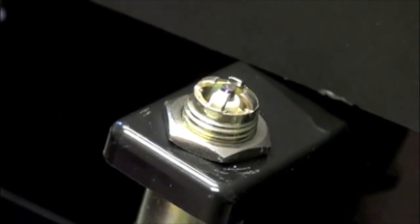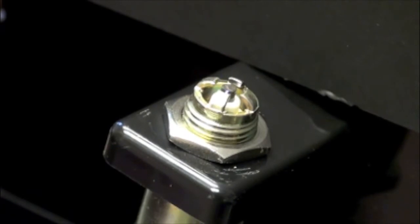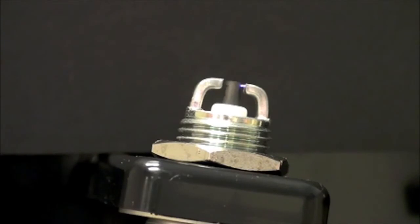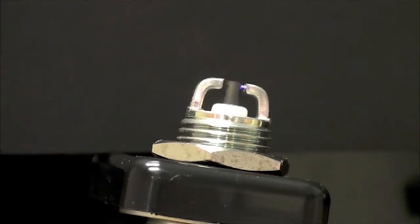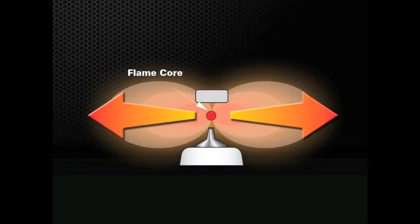The increased durability and fouling protection provided by multiple ground electrode spark plugs often comes at the cost of ignitability. Because of the increased electrode mass in the combustion chamber, the flame kernel can only expand so far because some of the heat energy from the spark is lost, which can reduce or even extinguish the flame kernel.